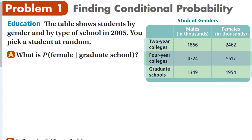Here is a contingency table with data from two different categories — males and females. The inputs are the types of colleges: two-year colleges, four-year college, and graduate schools. There are two sets of outputs: the male outputs and the female outputs. The table shows students by gender and by type of school in 2005. You pick a student at random.